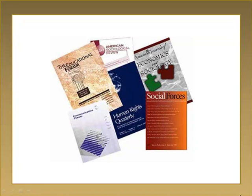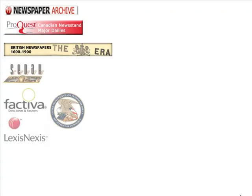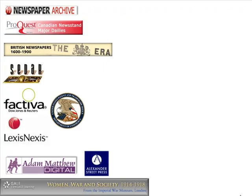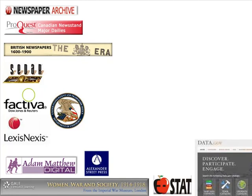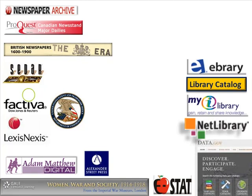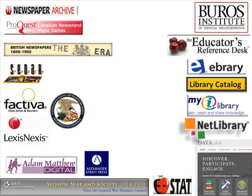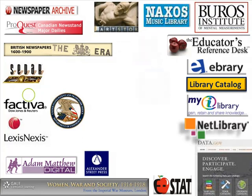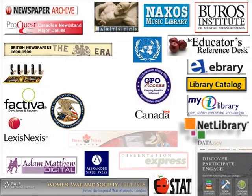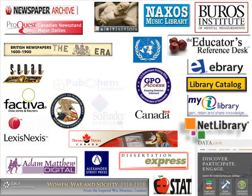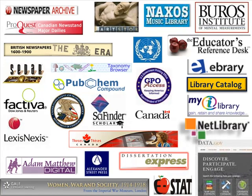Frequently databases are created to help people identify research published in journal articles. However, it is important to know that there are also databases for newspapers, business and legal information, primary sources, statistical data, books, e-books and book chapters, education and psychology resources, creative works, government documents, theses and dissertations, compounds, taxonomies and genetic information, or any combination of the above, dependent upon the discipline and the types of resources people in that area need access to.